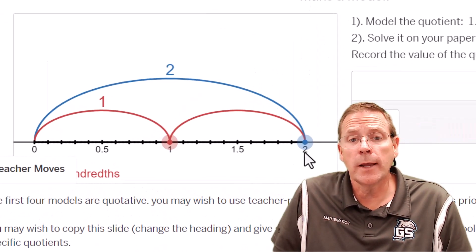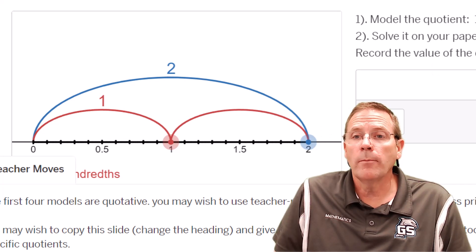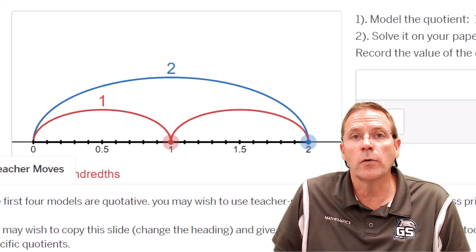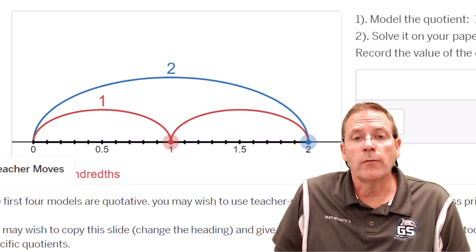This is actually the first problem, the link is in your Canvas page, where we have 1.4 divided into 0.35 sections, also known as one and four tenths divided by 35 hundredths.